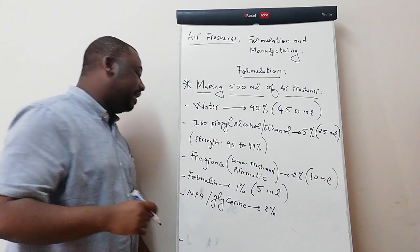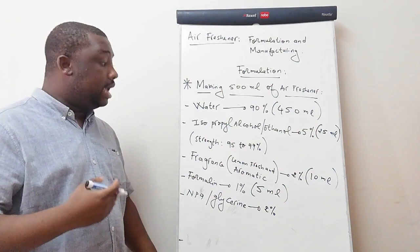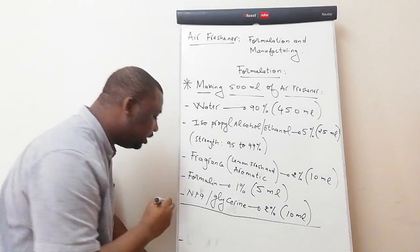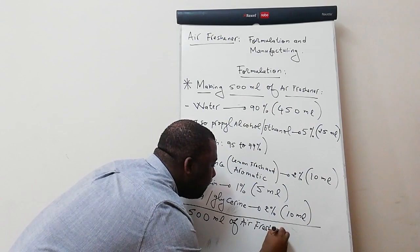The next ingredient is NP9 or glycerin. In this case we're going to make use of NP9 — this should be two percent of the total volume. Two percent of 500 mils is 10 mils. By doing this you actually obtain your 500 mils of air freshener.